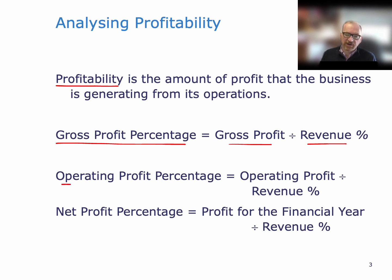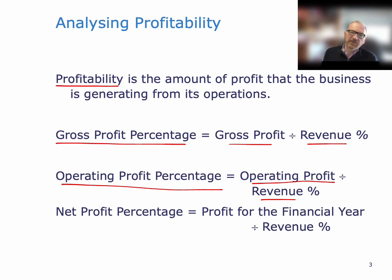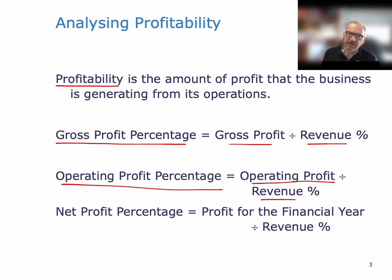The gross operating profit percentage includes more costs or expenses. It's operating profit divided by revenue. So you take the operating profit, and that takes into account other expenses like sales, selling expenses, general expenses, and administration expenses. So operating profit tells you how much profit you're making after paying both the costs of making or buying in the products and the selling, general, and administration expenses as well.